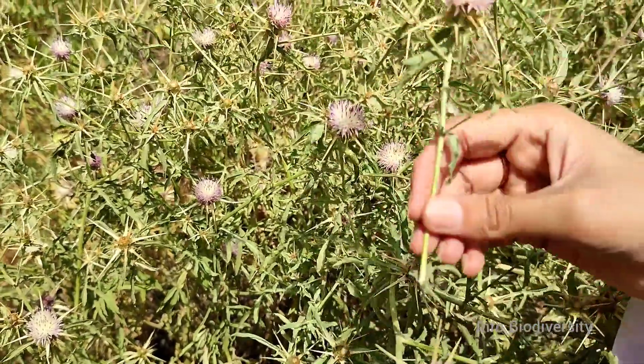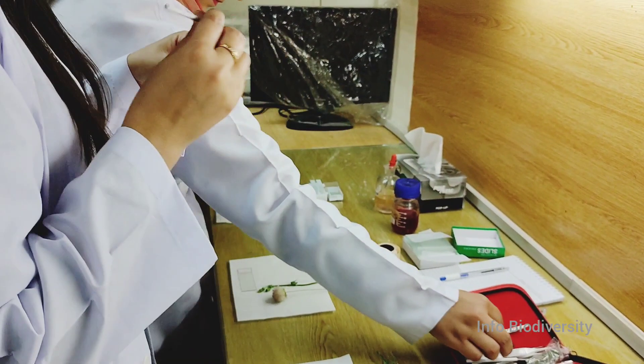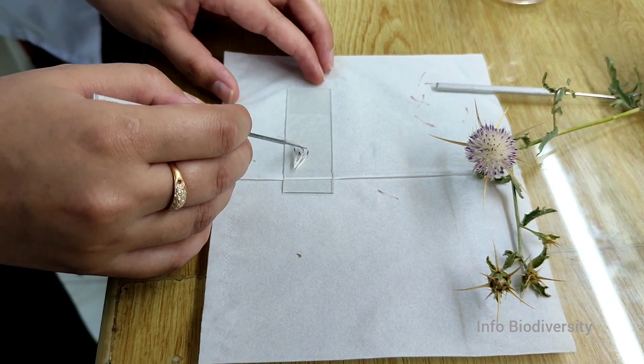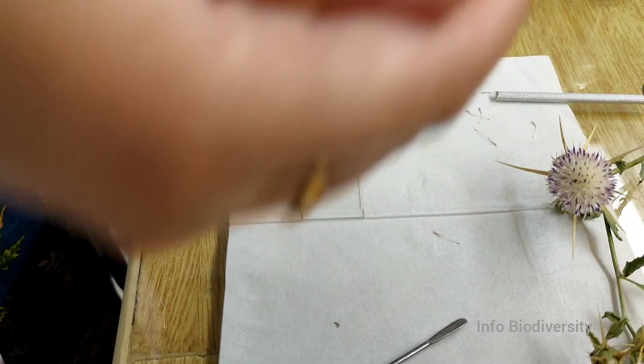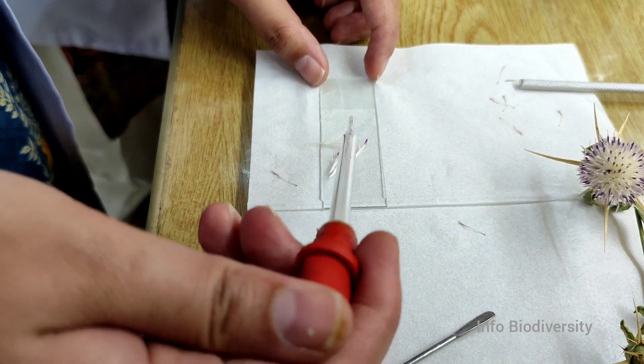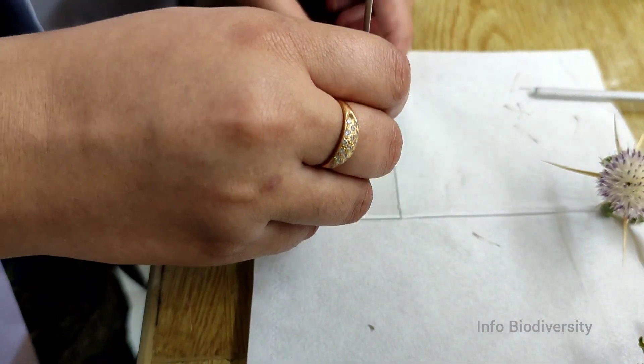The first step is the collection of the flowers from the field. The second step is to separate the anther from the flowers and put these anthers on a glass slide. Then we have to put a drop of acetic acid. Acetic acid is basically used to clear the pollen surface.